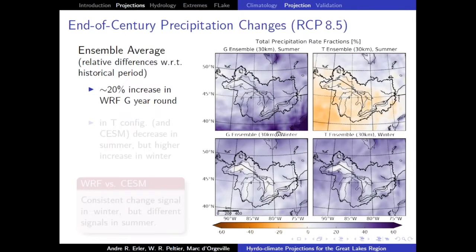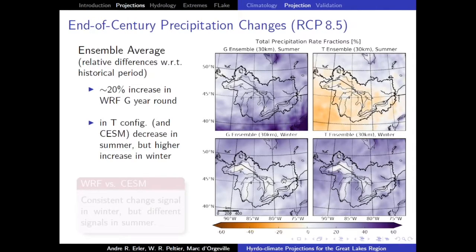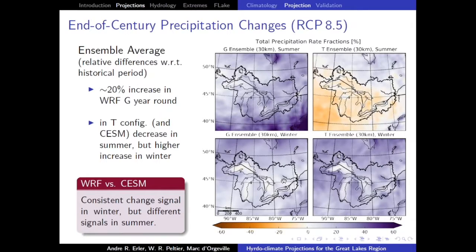For the precipitation field, winter is fairly consistent between configurations. But in summer there is a large difference — even the opposite sign. The T configuration gives less precipitation in summer whereas the G configuration gives more. CESM shows even more decrease than the T configuration. So these three models basically span the entire range of possibilities, which is discouraging — there's very low prediction confidence for summer precipitation, whereas for winter they are all consistent.